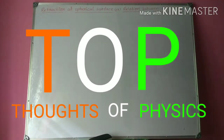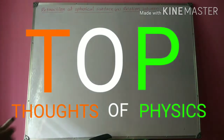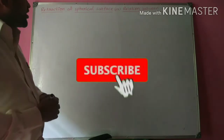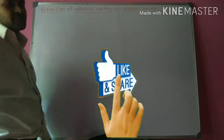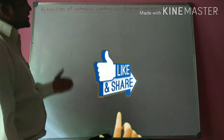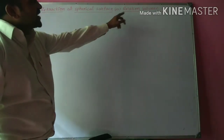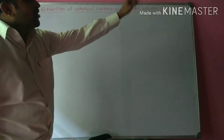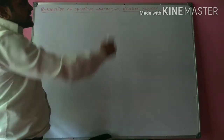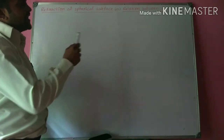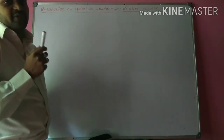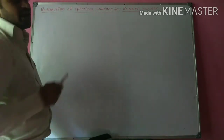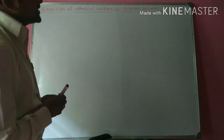Hi students, welcome to my channel Thoughts of Physics. In the video series of Ray Optics, in this class, I am going to explain refraction at spherical surface, also known as the relation between U, V, N, R, where U is object distance, V is image distance, N is refractive index of the medium, and R is the radius of curvature of the spherical surface.